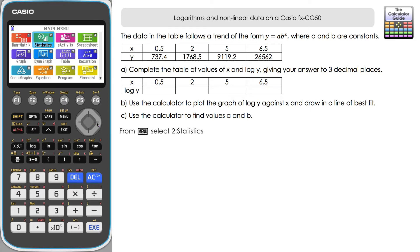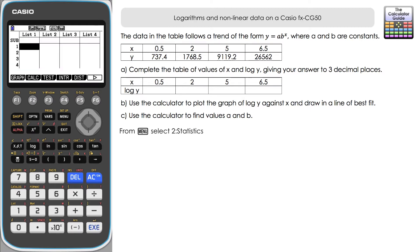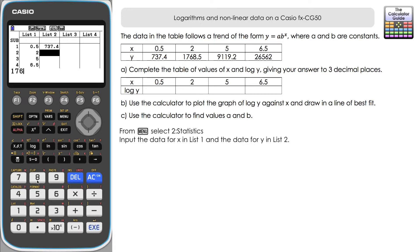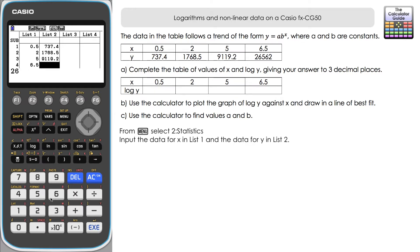We're going to go to Statistics from the menu. In list one we're going to input the X values: 0.5, 2, 5, and 6.5. In list two we're going to input our Y values: 73, 7.4, 1768.5, 9119.2, and lastly 26562.